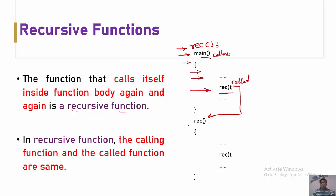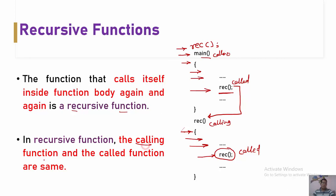Now inside this rec function, the compiler executes successive stages. If you see within the rec function, the same rec function is again being called. So right now, rec is working as a calling function and again rec at this stage is working as a called function. So here the calling function and called function are the same. When it reaches that stage, the program flow calls the same function again.